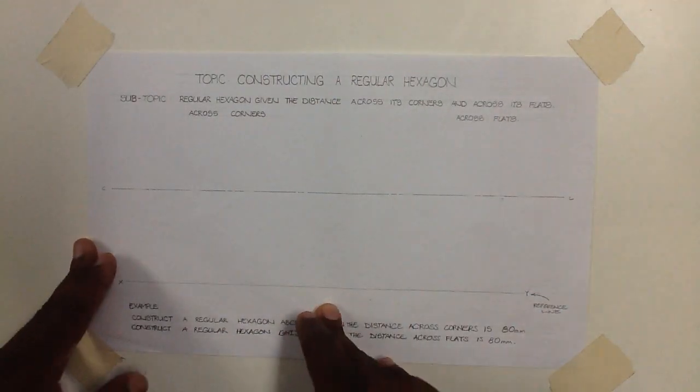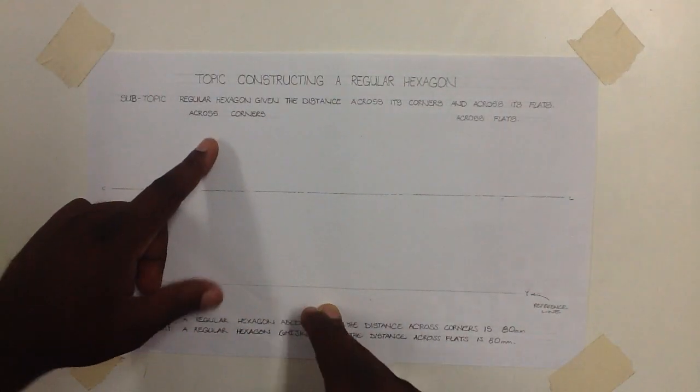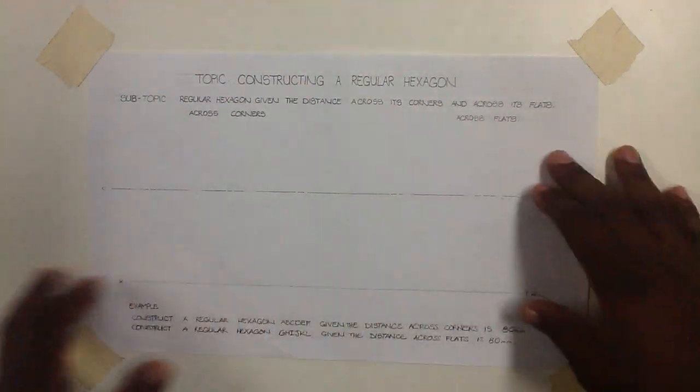In this section of our drawing sheet, we are going to construct a hexagon using the across corners method, and on this side, the across flats method.